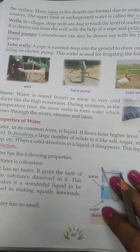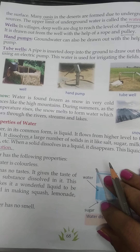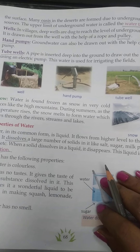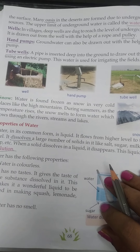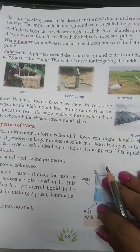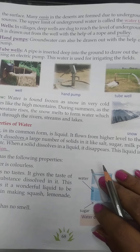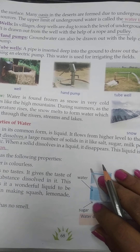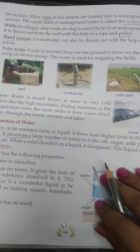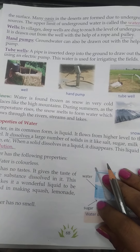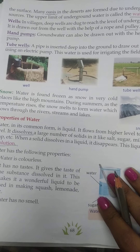So what are wells? In a village, deep wells are dug to reach the level of underground water and the water is drawn out from the well with the help of a rope and pulley. A pulley is a machine that is used for lifting heavy things. So a rope and pulley are used to draw out water from wells.